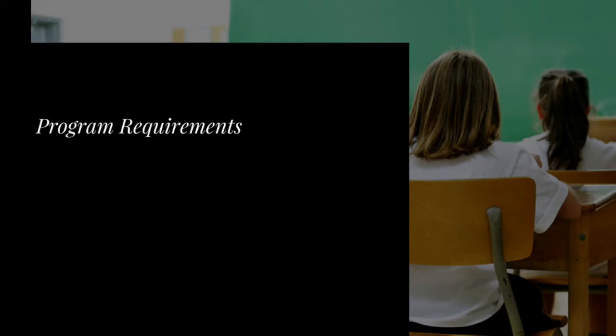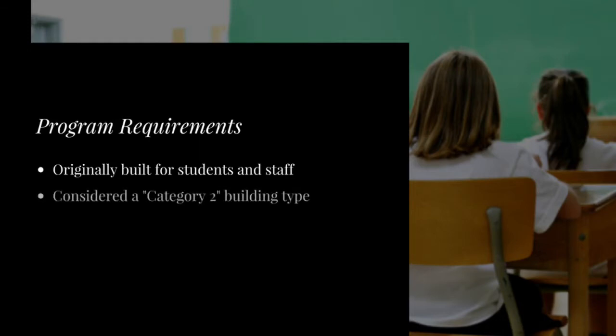Districts who wish to apply for the seismic mitigation program would start by first confirming that their facilities meet the basic requirements. These include that the building was originally designed for occupancy by students and staff, and that the building is considered a category 2 building type, which refers to the building structural system.